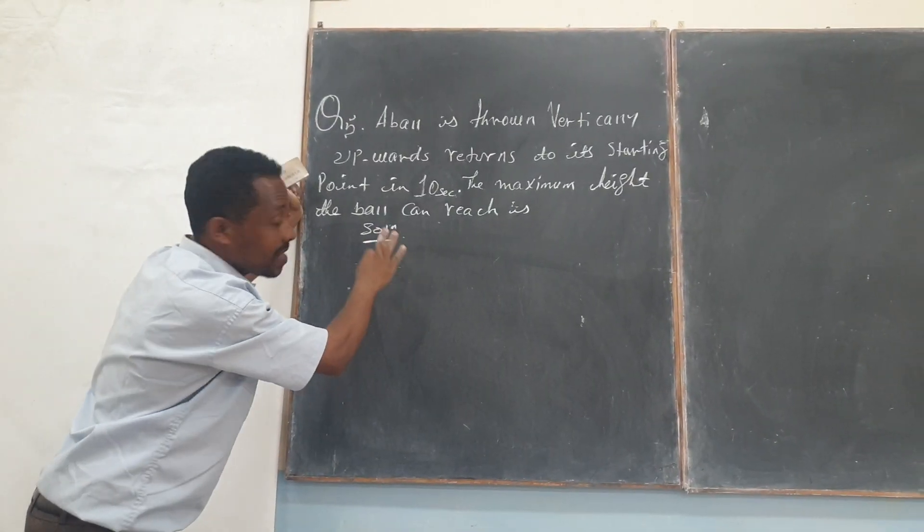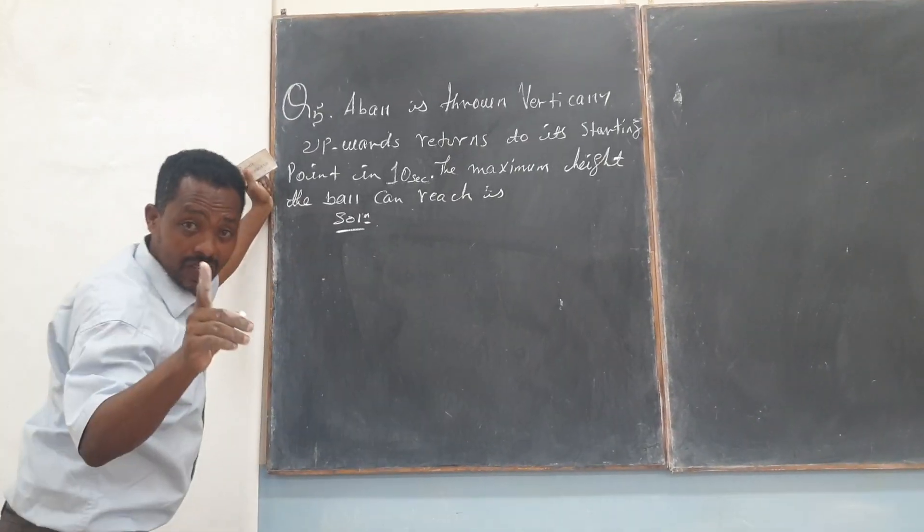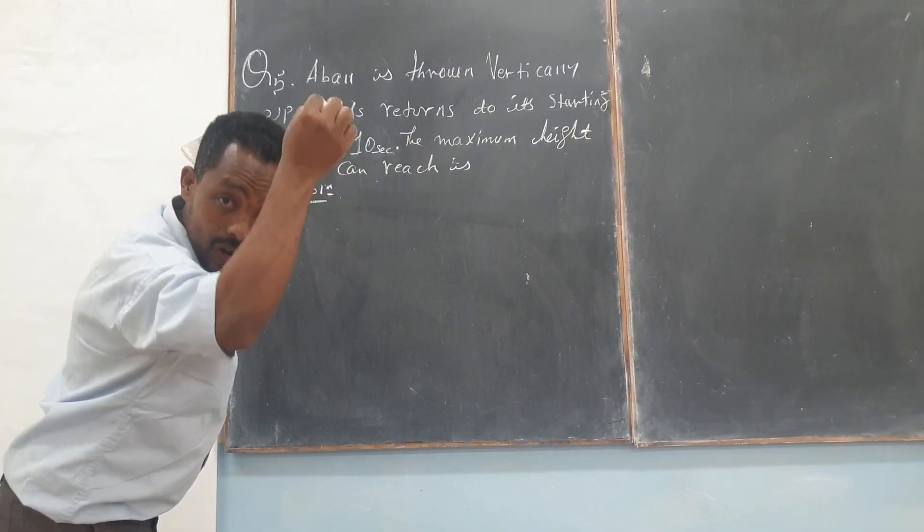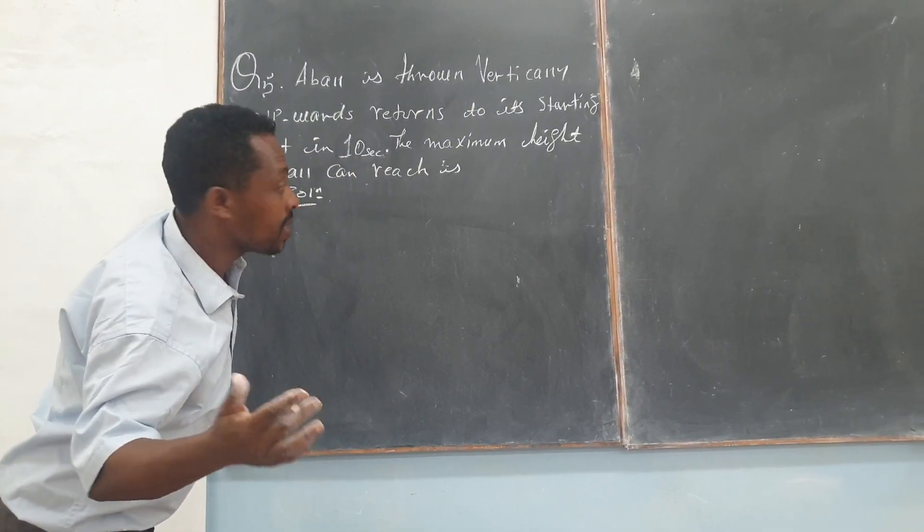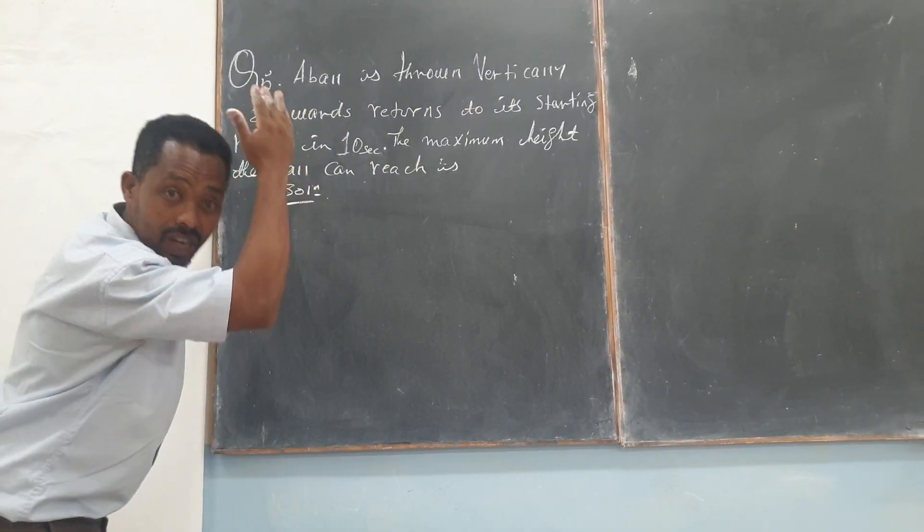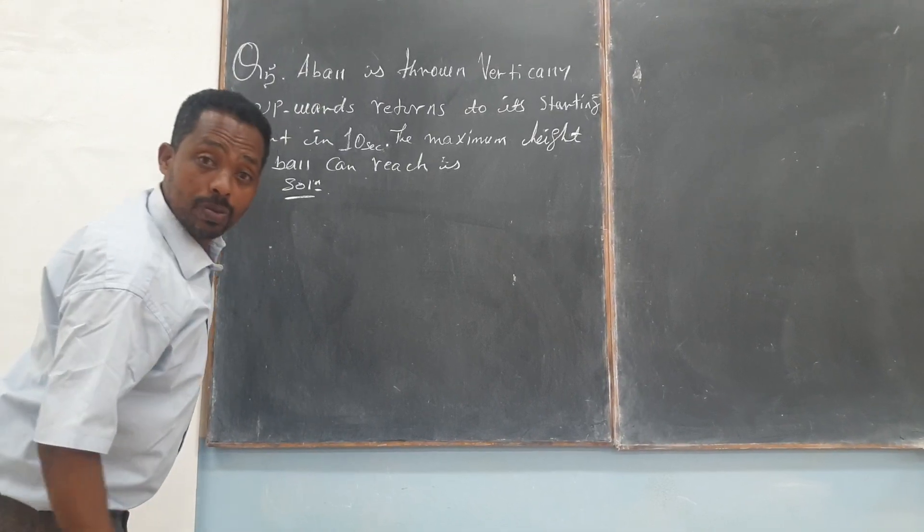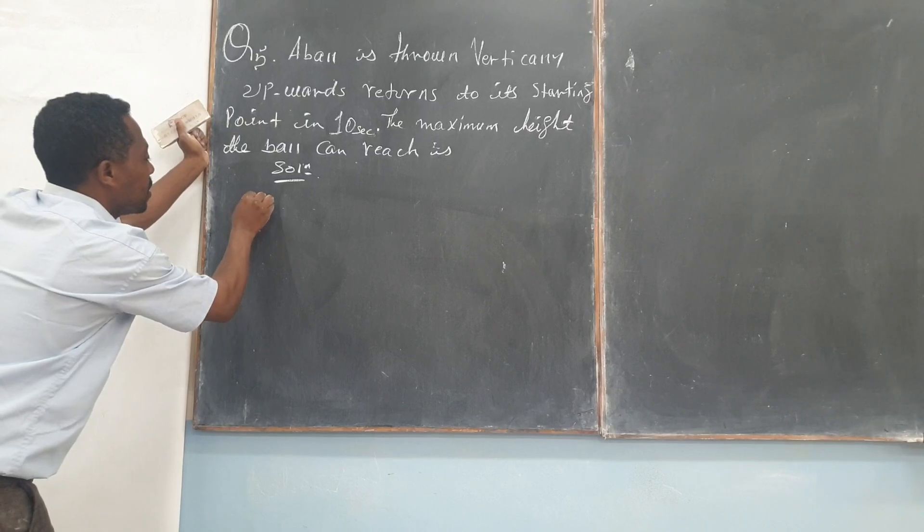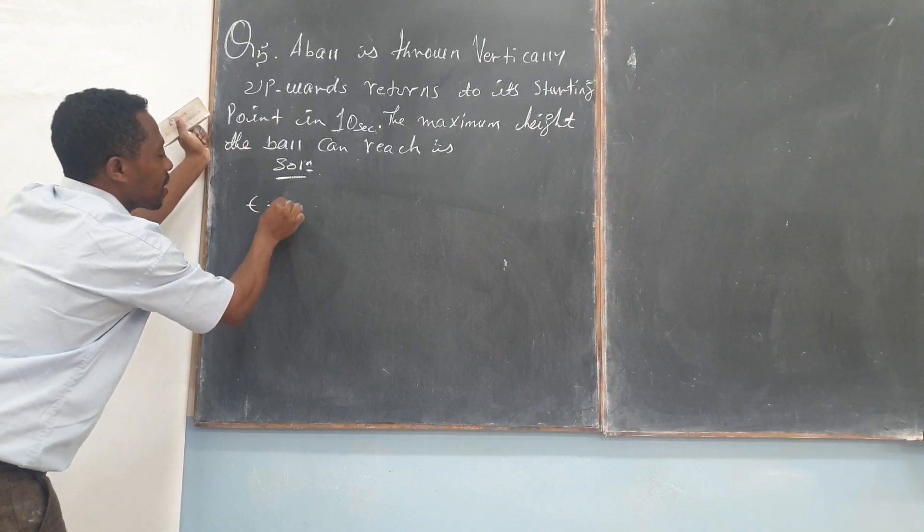That is 10 seconds. But since there is no dissipative force, the time required to go up as well as to go downward is equal. That's why, just consider the downward motion after the object arrives at the maximum height. That is 10 seconds, I mean 5 seconds. T, H to B, T is equal to 5 seconds.